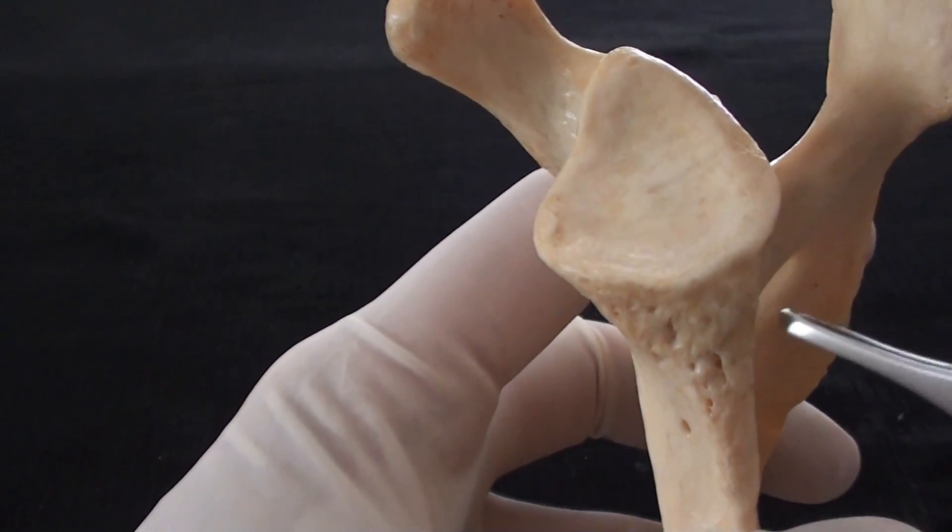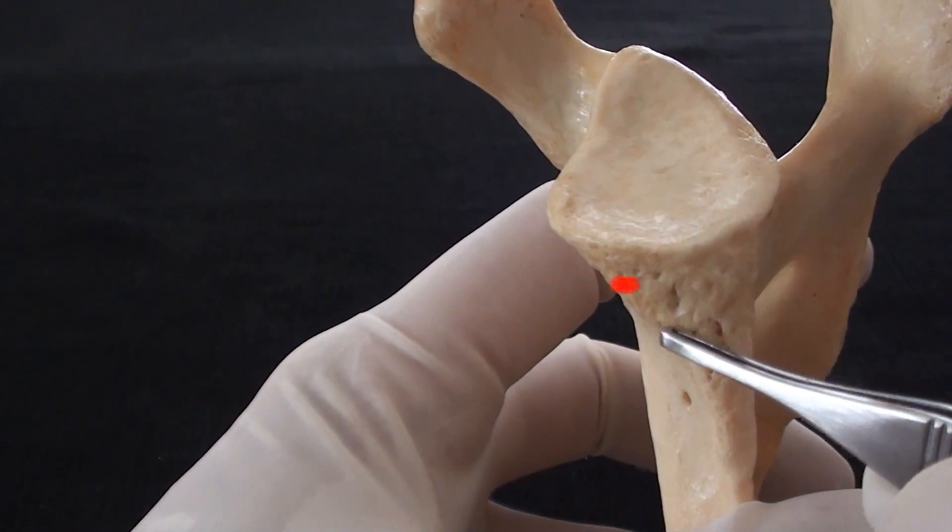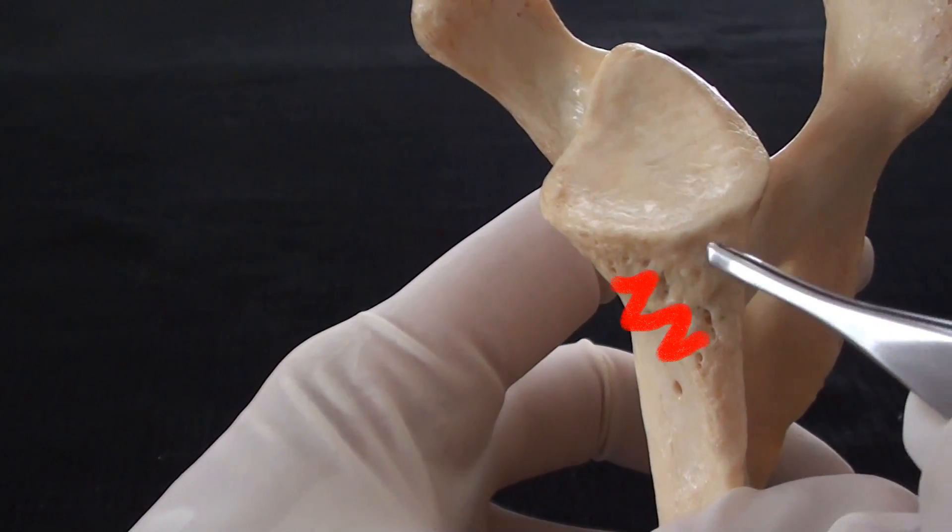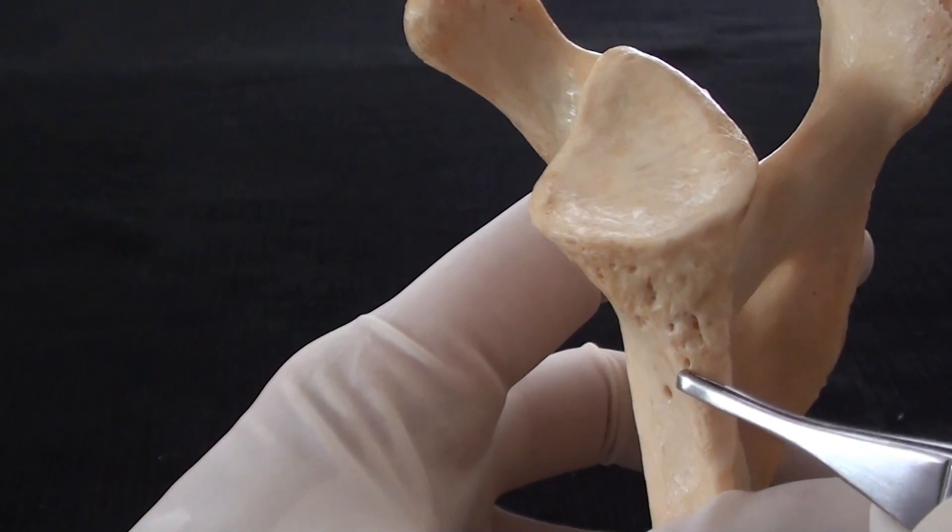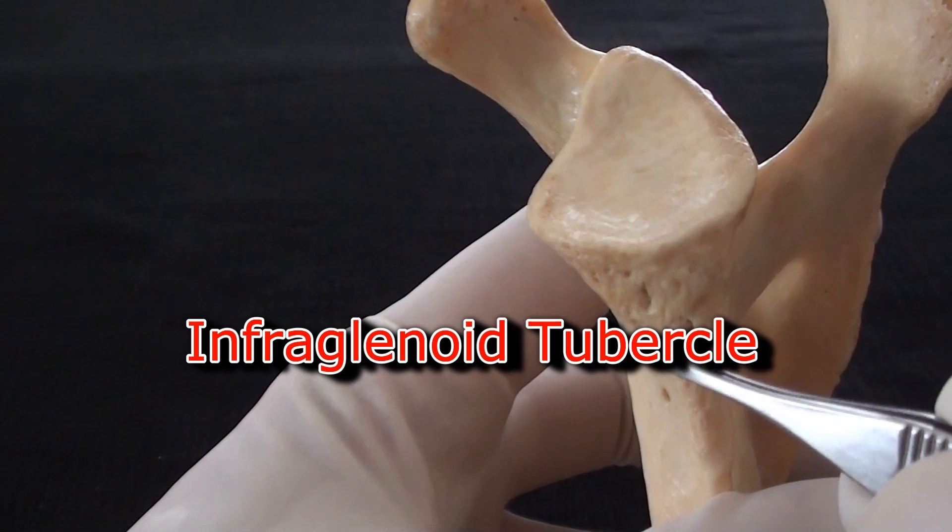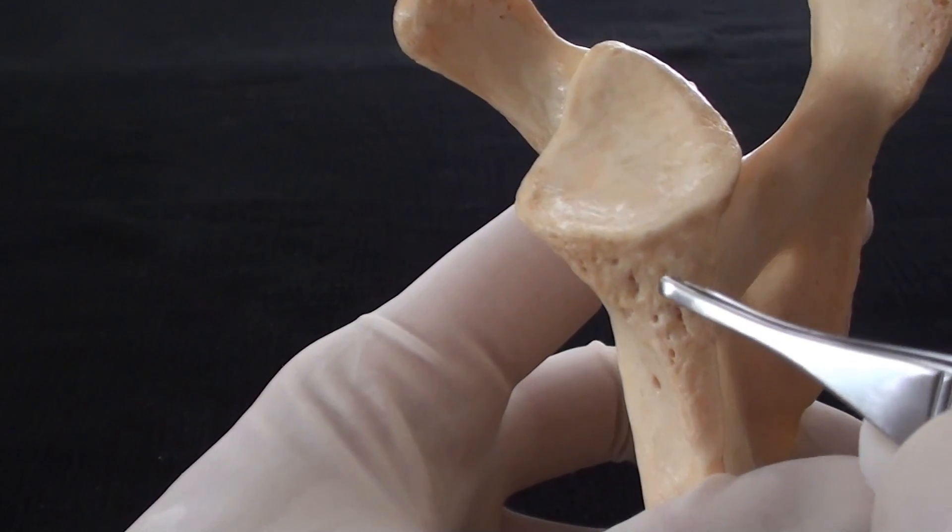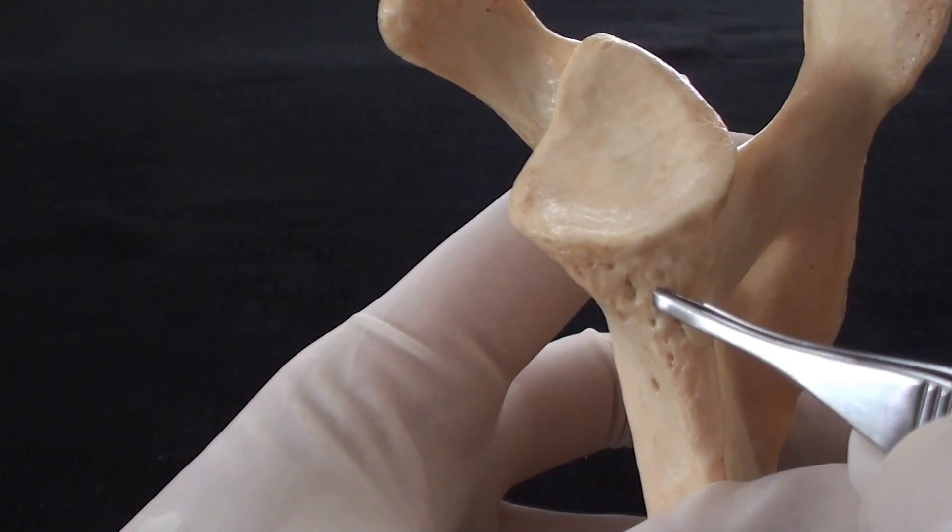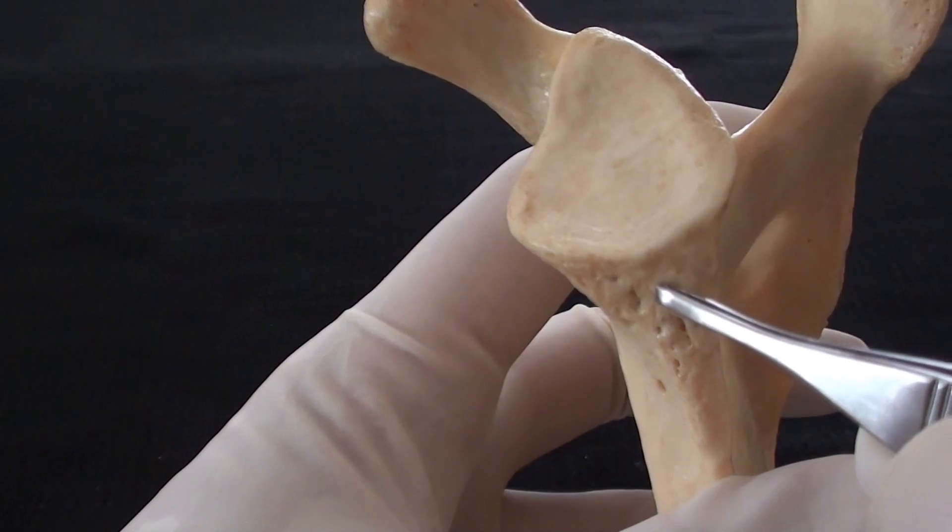Inferior to the glenoid fossa there is area of substantial roughness that is known as the infraglenoid tubercle that is the attachment of the long head of the triceps brachii muscle.